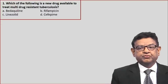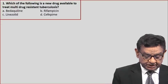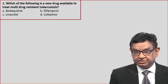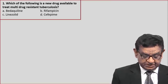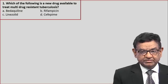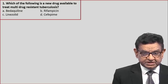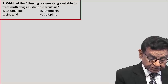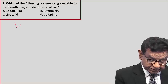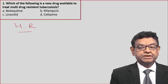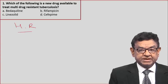First question: which of the following is a new drug available for multidrug resistant tuberculosis? The answer is A — bedaquiline. Before discussing, let us learn the meaning of multidrug resistant tuberculosis. If TB is resistant to INH and rifampicin, then we call it drug resistant tuberculosis.